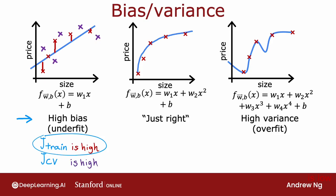Looking at the example on the right: if you compute J_train, it's actually doing great on the training set — fits the training data really well, so J_train here would be low. But if you were to evaluate this model on other houses not in the training set, you find that J_CV, the cross-validation error, will be quite high. A characteristic signature that your algorithm has high variance is if J_CV is much higher than J_train — in other words, it does much better on data it has seen than on data it has not seen.